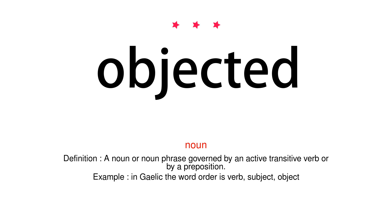Noun. Definition: a noun or noun phrase governed by an active transitive verb or by a preposition. Example: in Gaelic the word order is verb, subject, object.